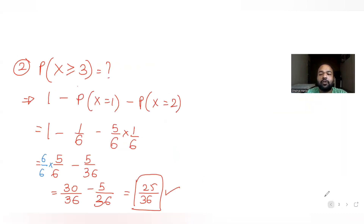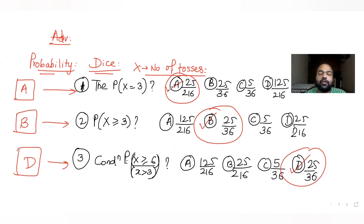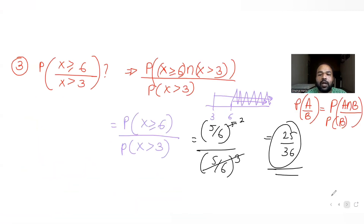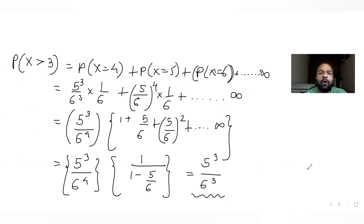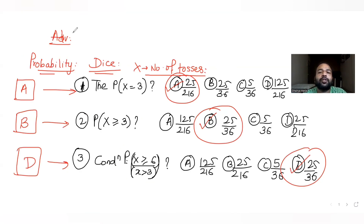So the answer for the third part is also 25 by 36. The respective answers for the 3 questions on the dice are A, B, and D. I hope you have understood how to solve this type of question where you throw a die until a certain outcome is obtained. I will see you again tomorrow with another question. Till then, like, share, and subscribe to my channel, and share these videos with your friends who are preparing for JEE Advanced.